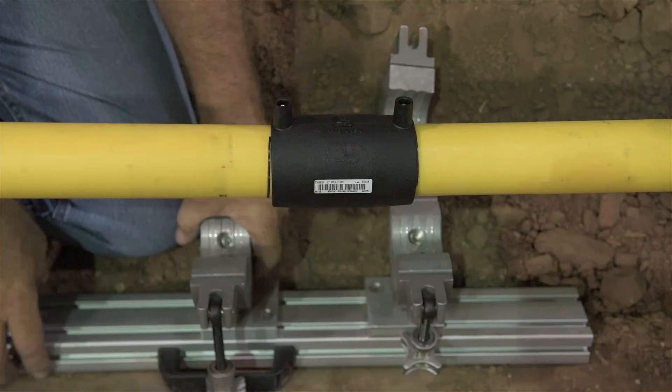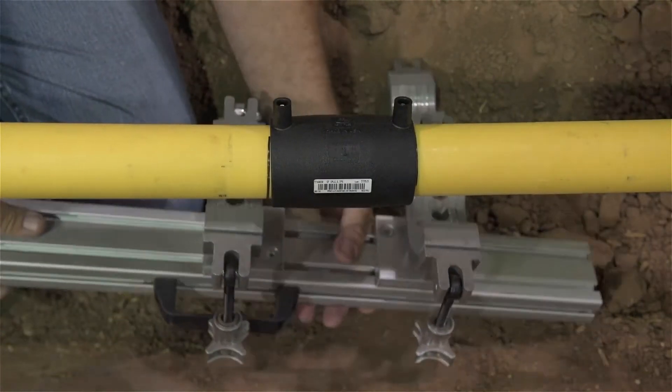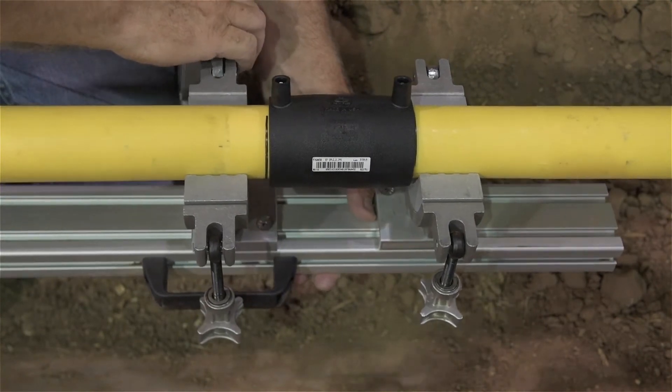make sure stab depth marks are visible and properly positioned on each side of the coupling. Place the multi-clamp kit under the pipe and close the clamps as shown.